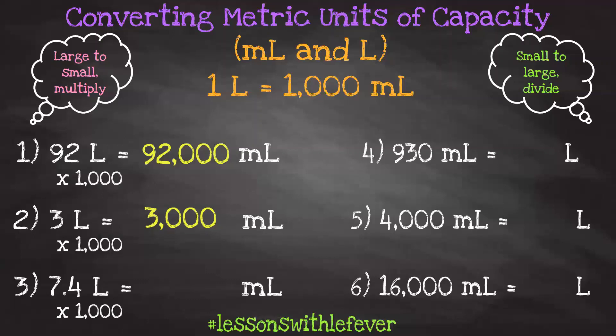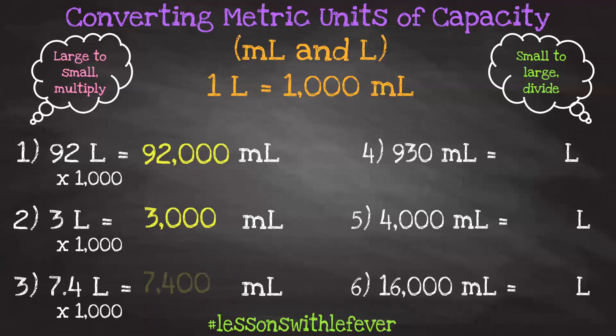I always tell my students to annex three zeros any time you're multiplying powers of 10 — annex the number of zeros that's in your power of 10, which here is three. So this is what our number should look like: 7.400. We didn't change the value of 7 and 4 tenths, because 7 and 4 tenths and 7.400 are equivalent decimals. Our second step is to move the decimal point three places: one, two, three. We don't need that last zero, so our answer is 7,400 milliliters.